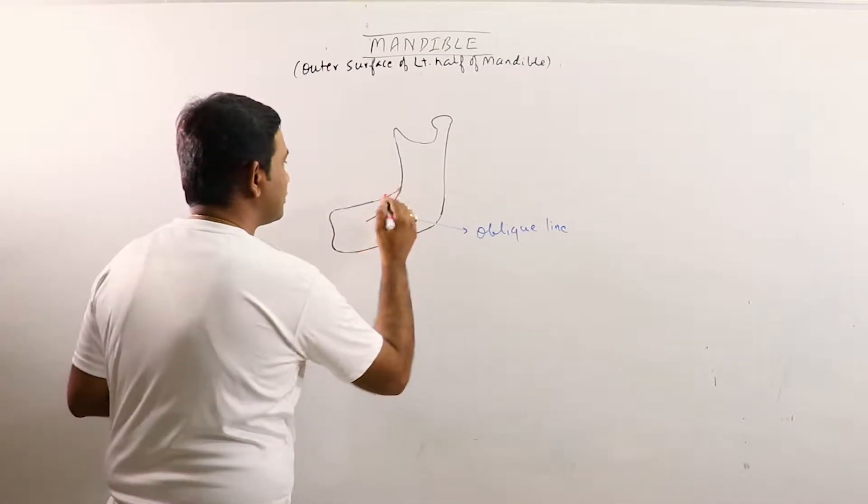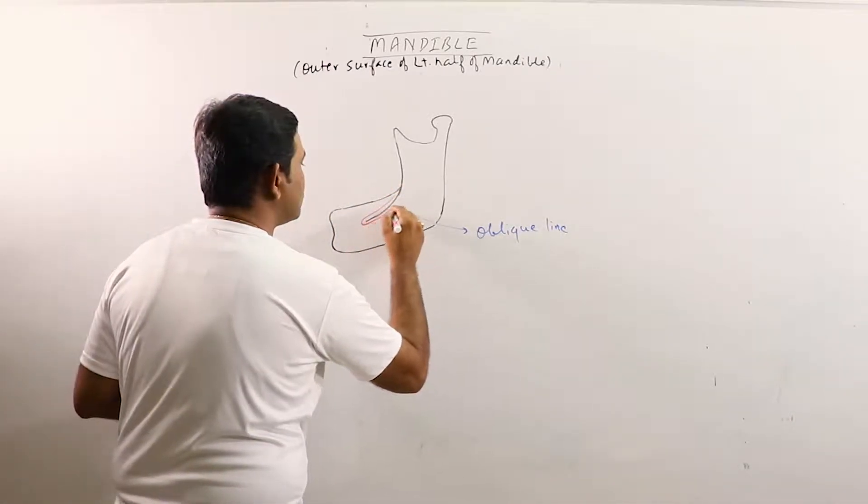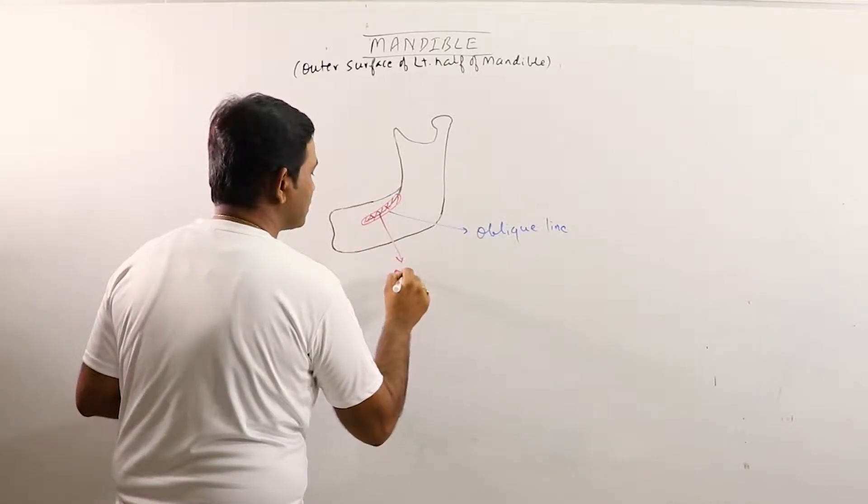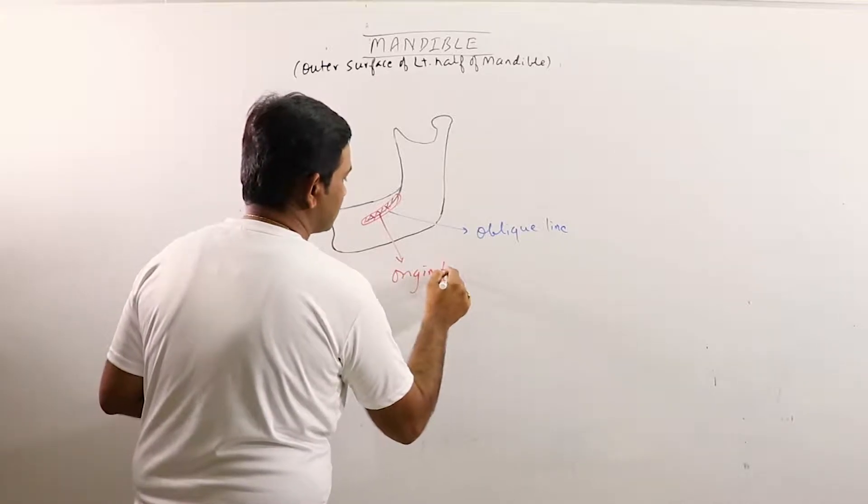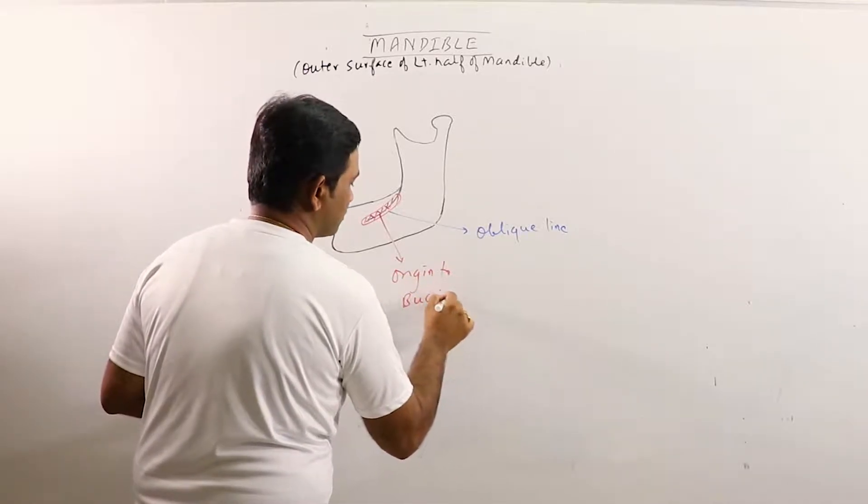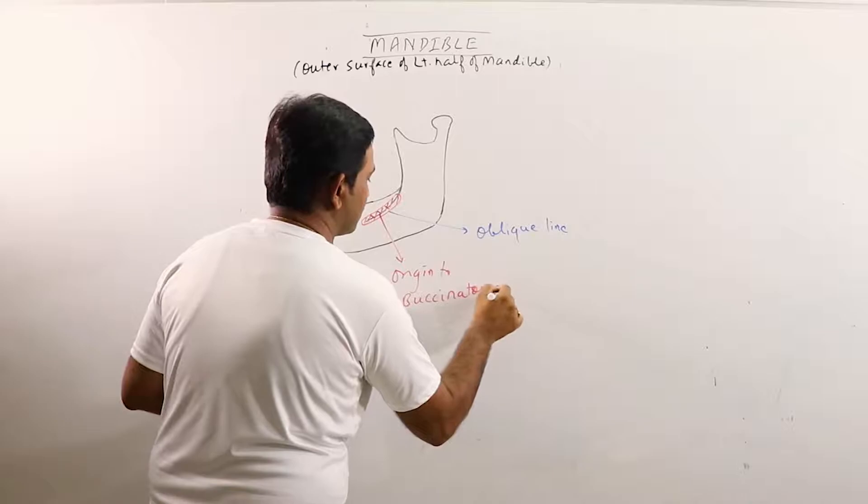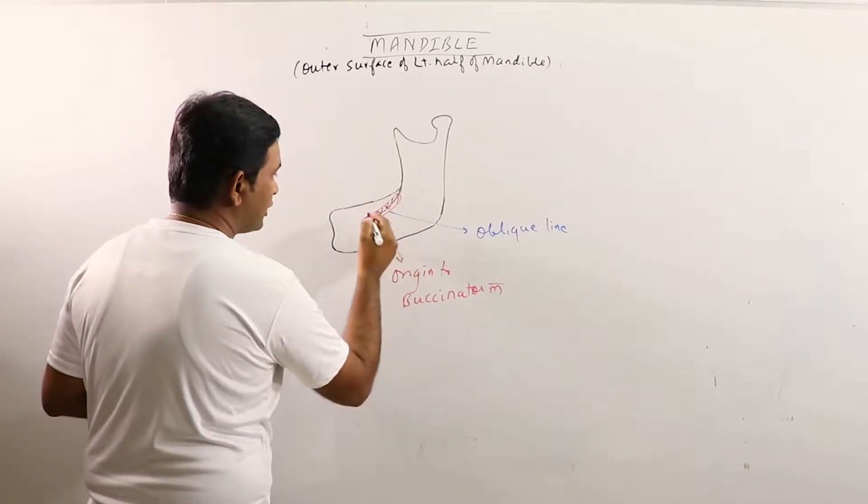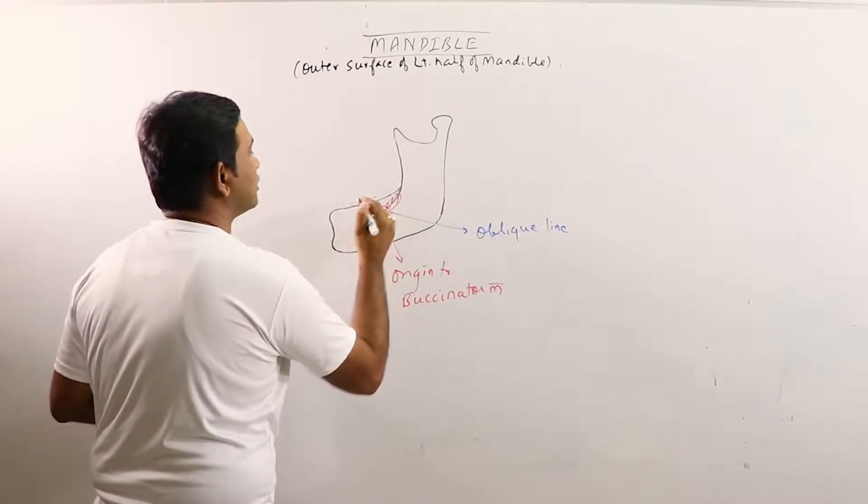Oblique line gives origin to buccinator muscle which continues up to the anterior margin of the third molar.